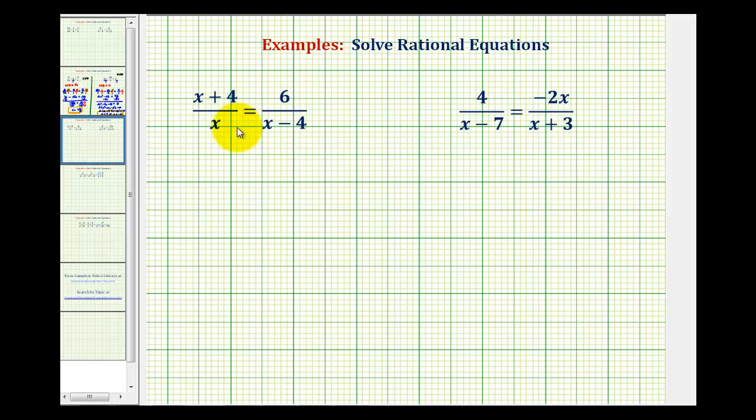So looking at our first example here, since we have a denominator of x and a denominator of x minus 4, the least common denominator would be the product of x and x minus 4. So in general, we're going to find the LCD and then multiply both sides of the equation by this expression.